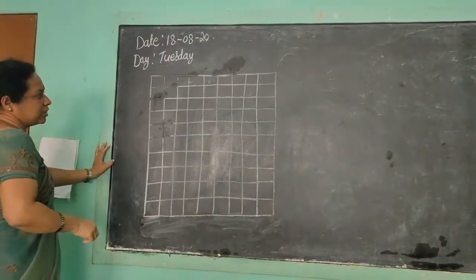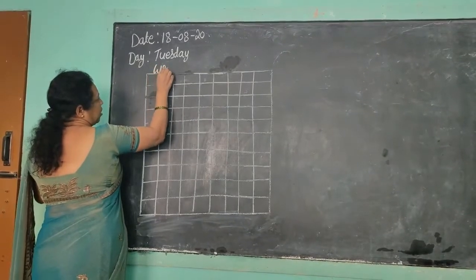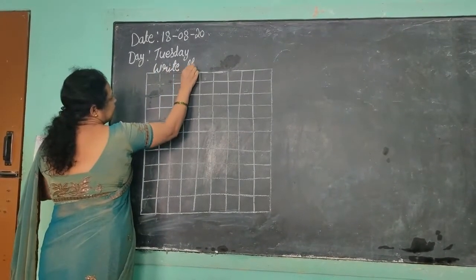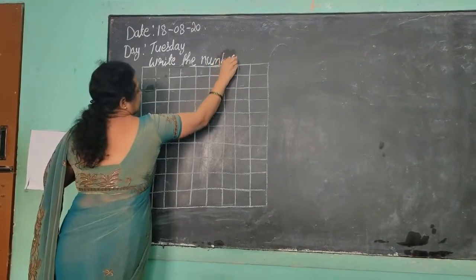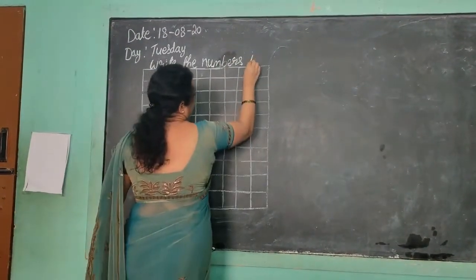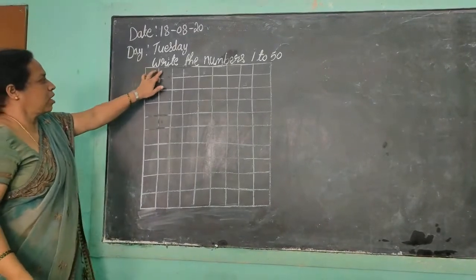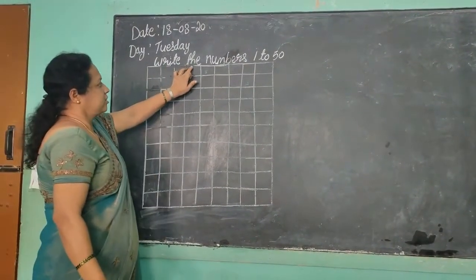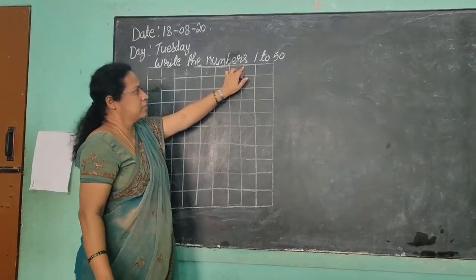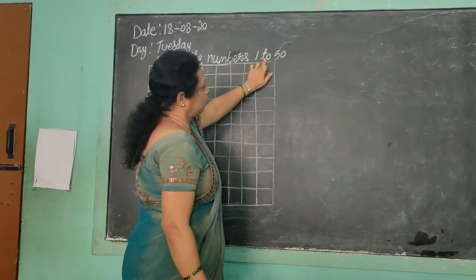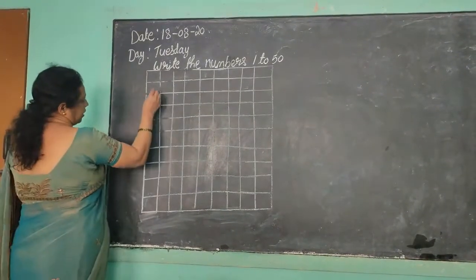So today what we are going to learn about is the numbers. Now write: W-R-I-T-E the numbers N-U-M-B-E-R-S, 1 to 50. Write the numbers 1 to 50. Now in the box, we are writing numbers.